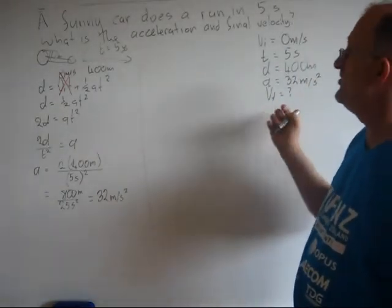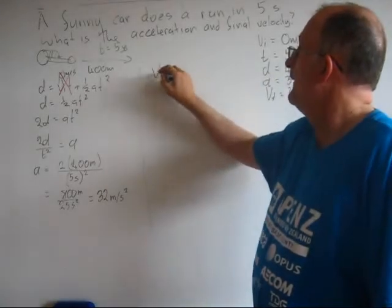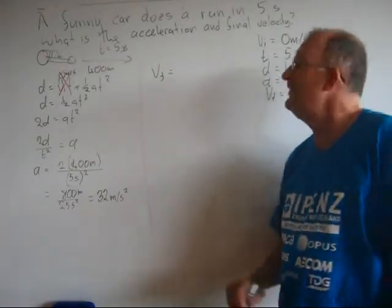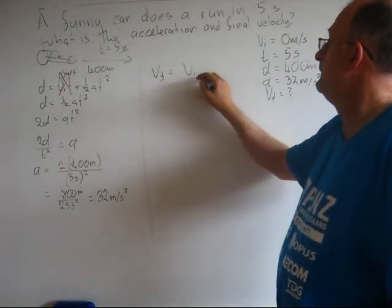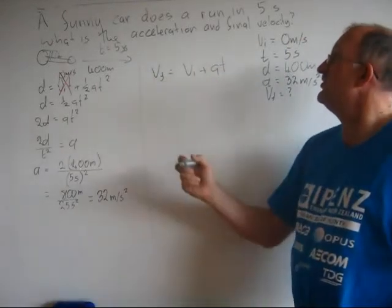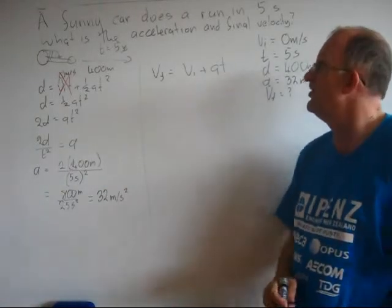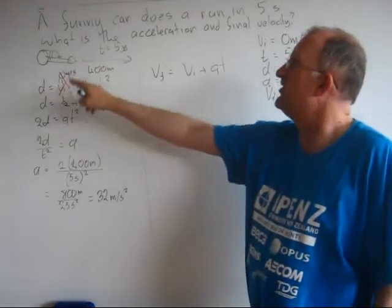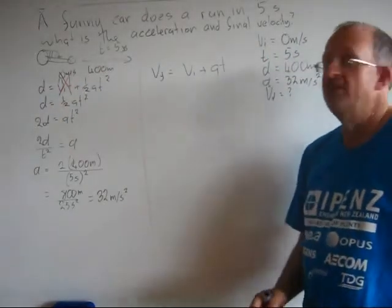Again, there's another equation which I know, which I'll show you later. So the final velocity equals the initial velocity plus the acceleration times time. So step 1: Draw a picture. Done that. Step 2: Write down what I know. Step 3: Choose an equation. Done that. Step 4: Rearrange the equation.